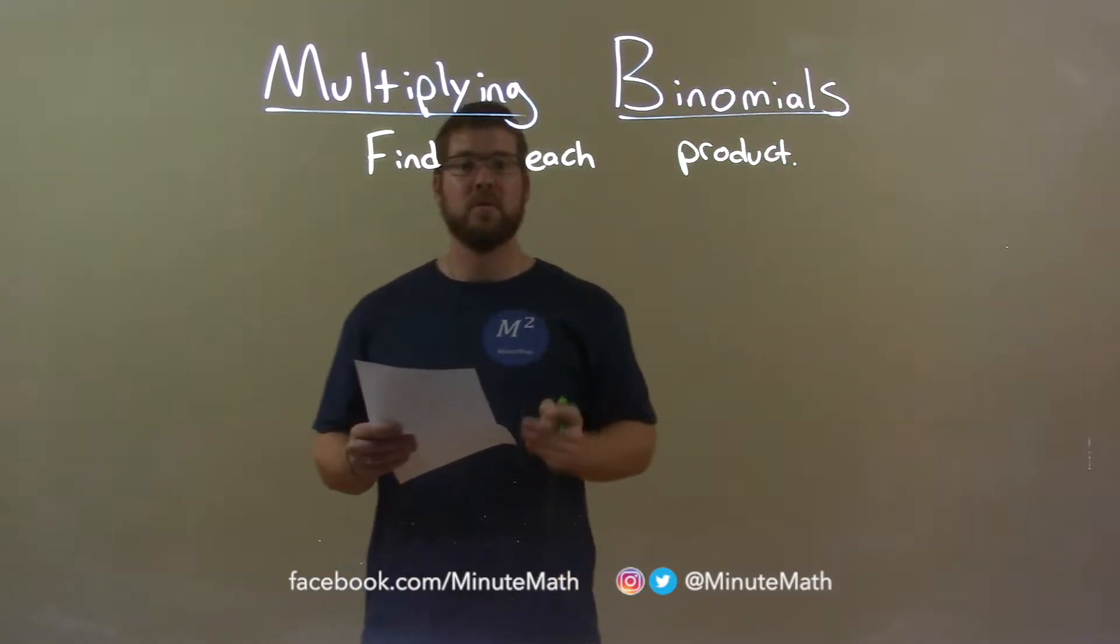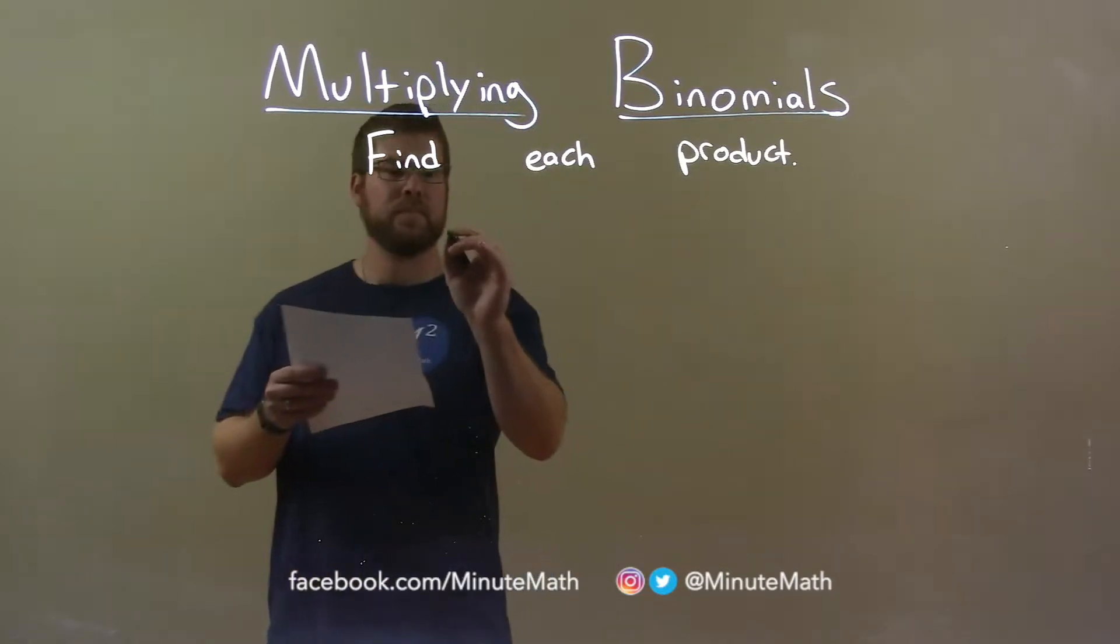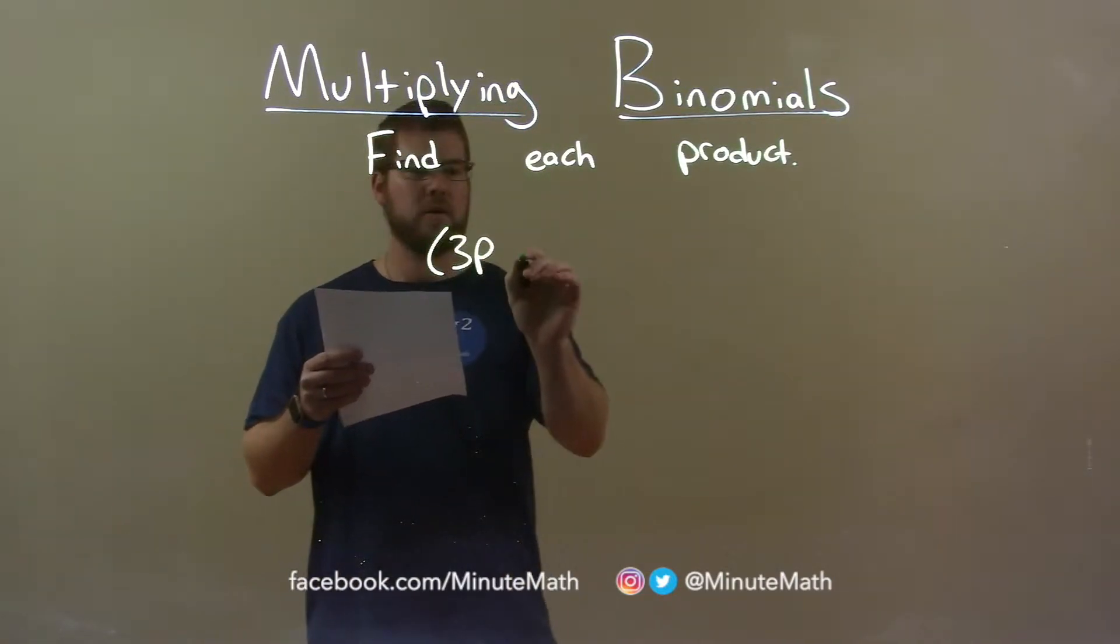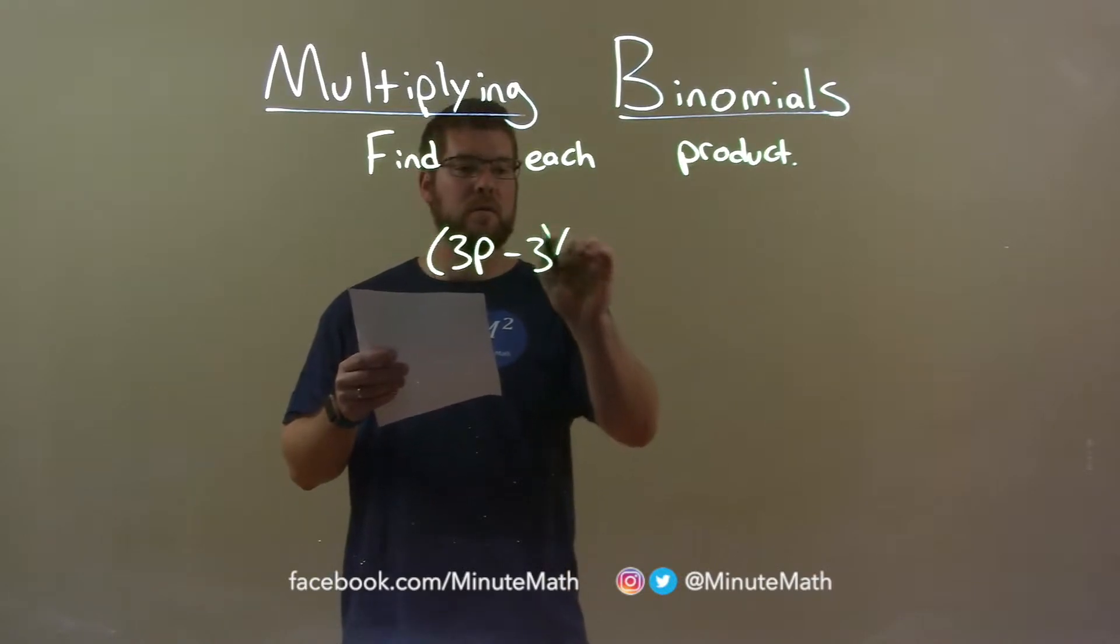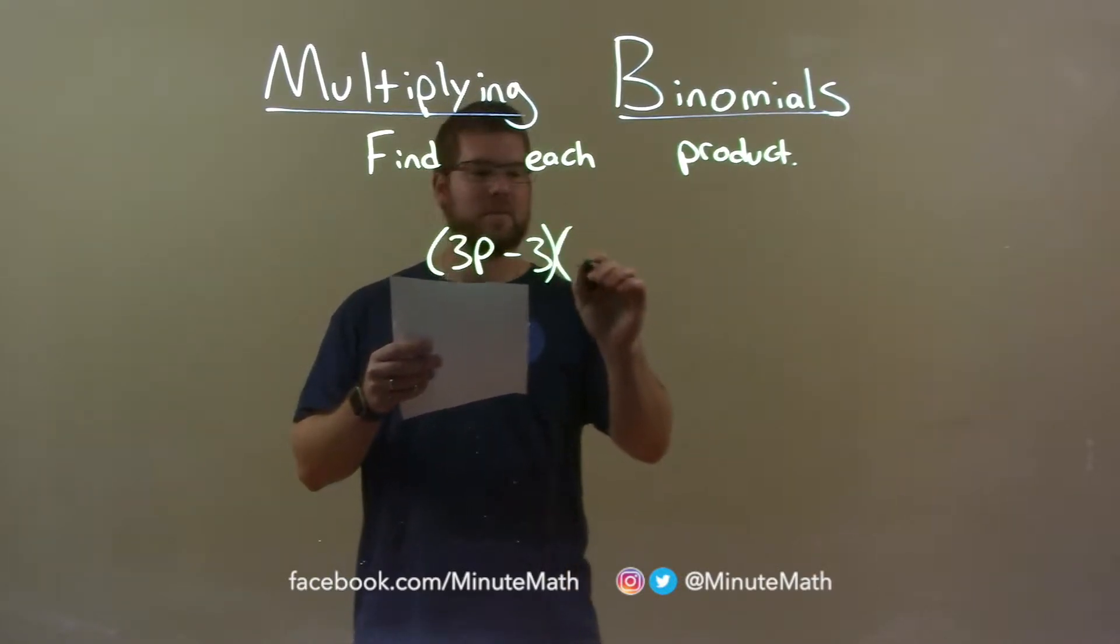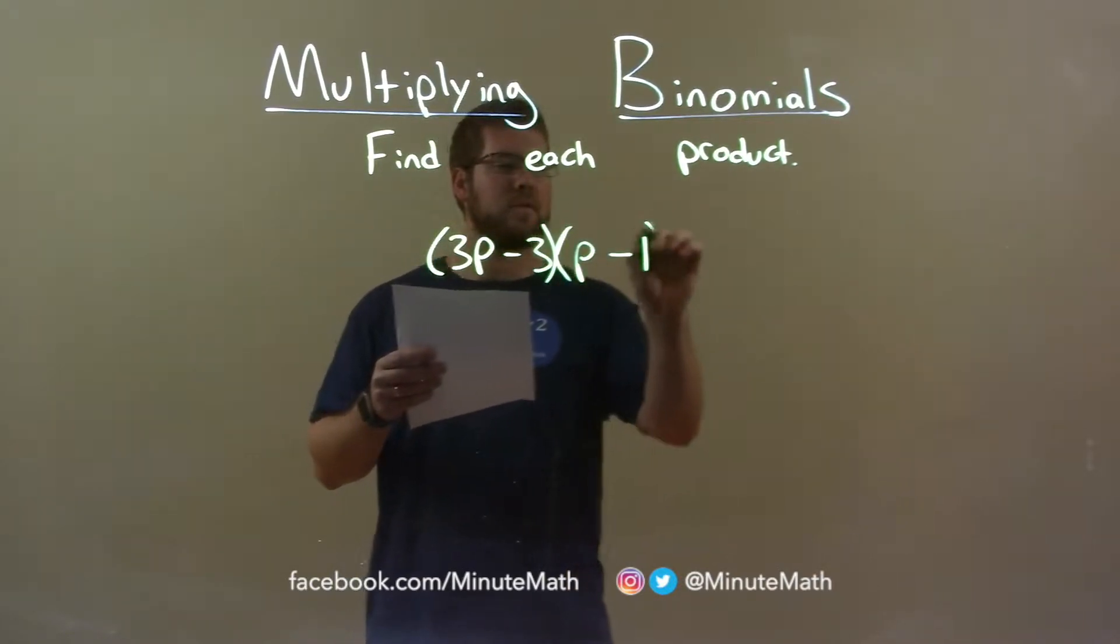So if I was given this product: (3p - 3) times (p - 1).